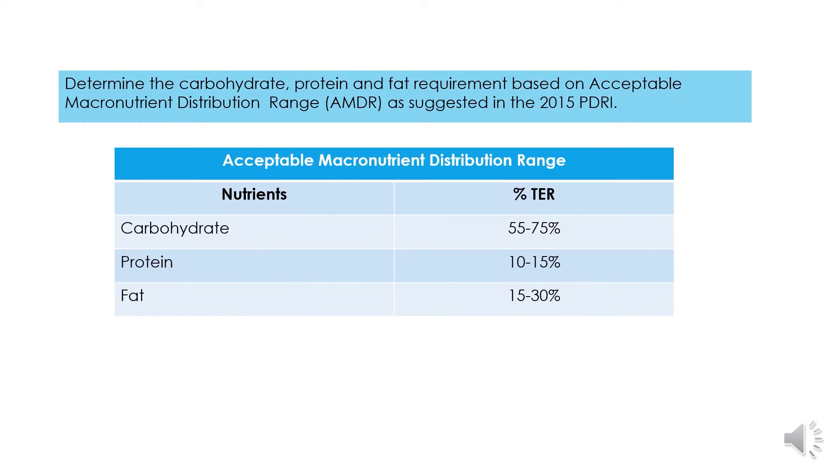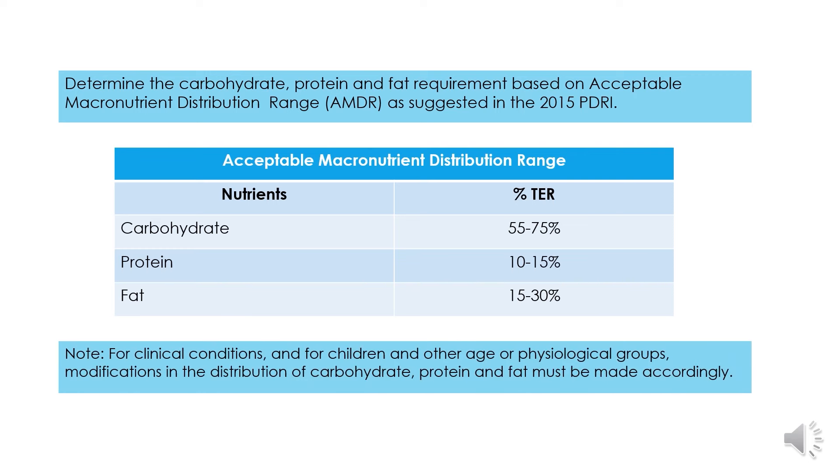55 to 75% from carbohydrate, 10 to 15% from protein, and 15 to 30% from fat. Please take note also that for clinical conditions, for children and other age or physiologic groups, there can be a modification in the distribution of carbohydrate, protein and fat.